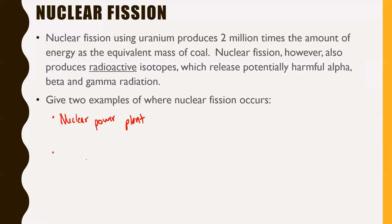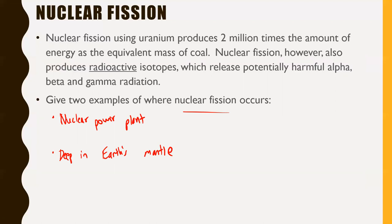Every nuclear power plant in existence today operates under nuclear fission. We'd like to get them to operate under nuclear fusion — we'll talk about that later. Another place nuclear fission occurs — one you wouldn't necessarily think of — is deep in Earth's mantle. Way underground, there are small nuclear fission reactions happening. It's not a gargantuan blast like a nuclear weapon, but there is believed to be a lot of nuclear fission occurring deep in Earth's mantle.